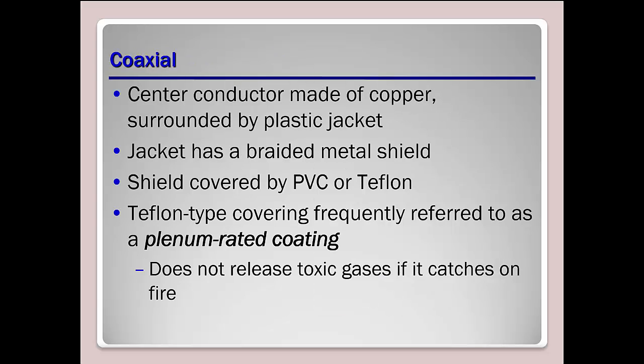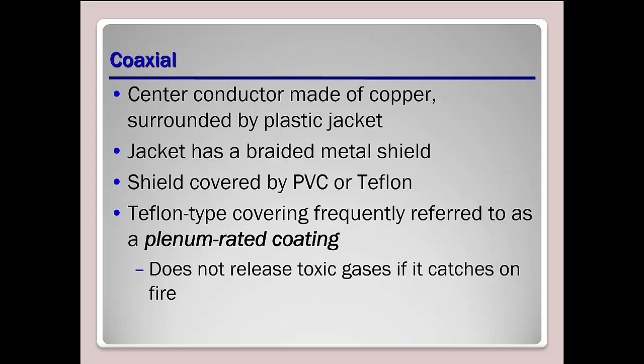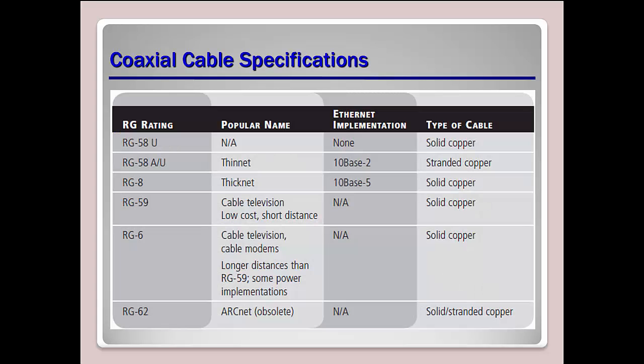Shielded twisted pair is really no longer popular in use, but it's there if you need it. Coaxial cable you're pretty familiar with — that's connecting your broadband into your modem, and then from your modem or cable into a cable box and out with HDMI. Standard coaxial cable specifications include RG59 and RG6, which are pretty much the standards we see today.